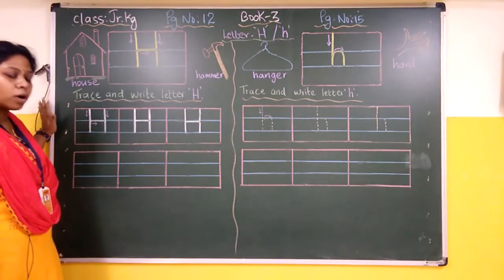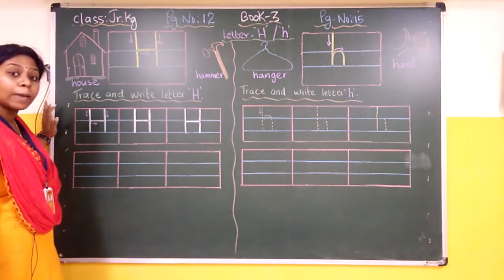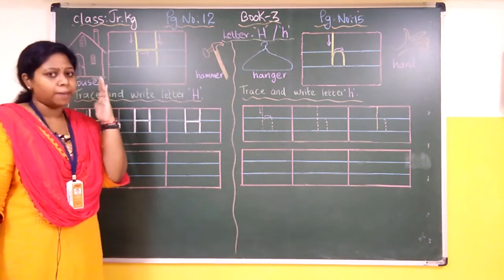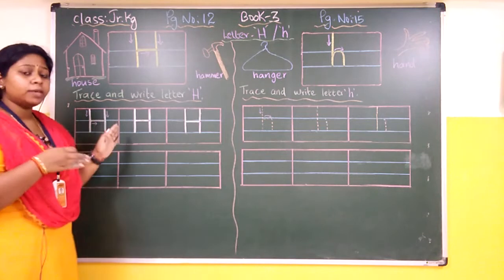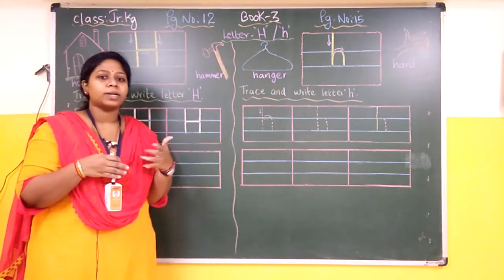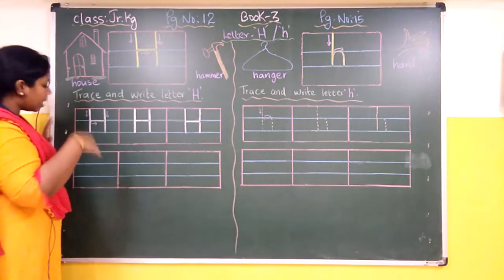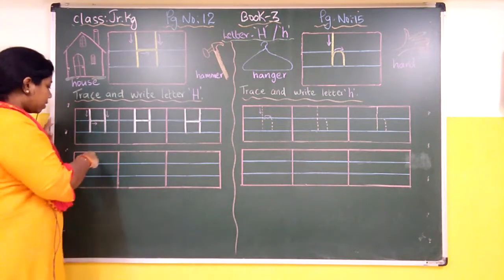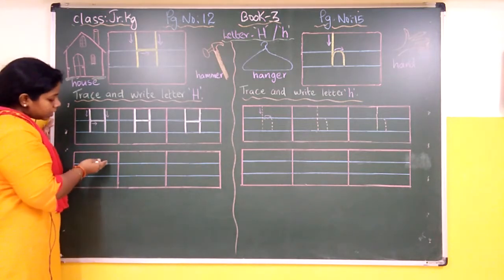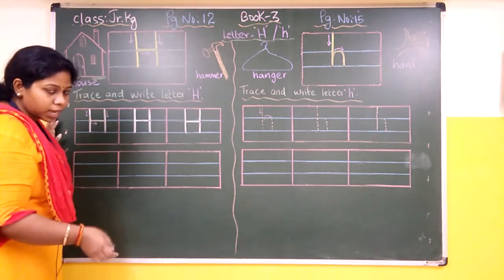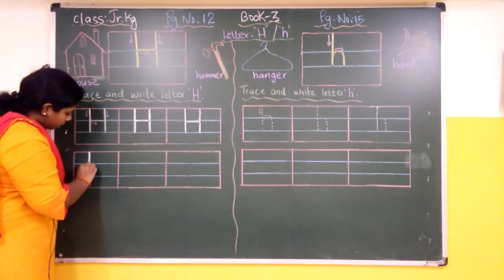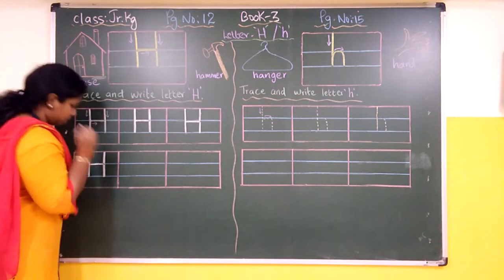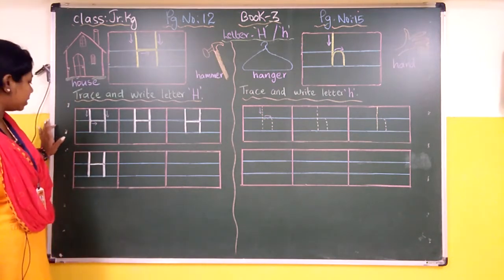Writing like this — which letter are we writing? We are writing capital letter H. H for house, hammer. So the remaining tracing portion you will complete by yourself neatly. Then coming to the writing part — there are no dots, no arrow marks, nothing. So what you will do, you will follow the lines. First three lines are only used. You will start from the red line to the blue line, again red line to the blue line, then a small sleeping line. Thus we get capital letter H.